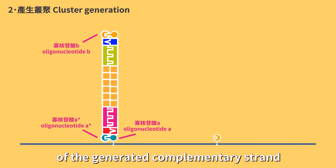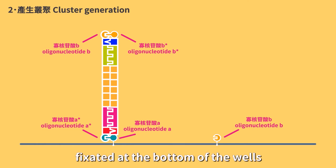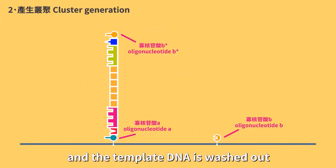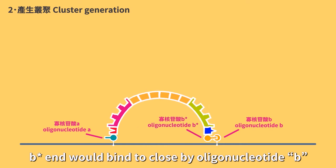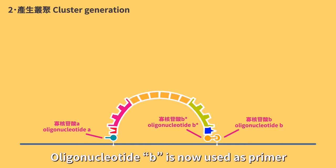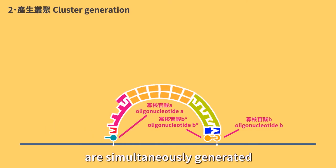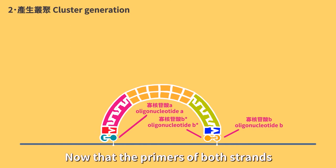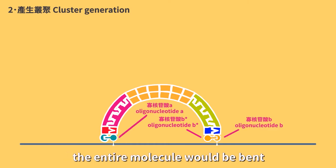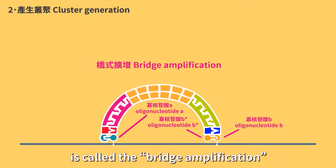Since the other end of the generated complementary strand will be B star and is complement to the oligonucleotide B fixated at the bottom of the wells, when double strand is denatured and the template DNA is washed out, the generated complementary strands B star end will bind to close by oligonucleotide B at the bottom of the well. Oligonucleotide B is now used as primer, while the complementary strand is used as the second template. Many complementary strands of the second templates are simultaneously generated by elongating from the fixated B at the bottom of the wells. Now that the primers of both strands are fixated to the bottom of the wells, the entire molecule will be bent into a bridge-like shape. And this type of amplification technique is called bridge amplification.